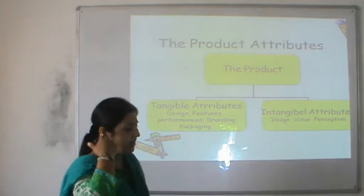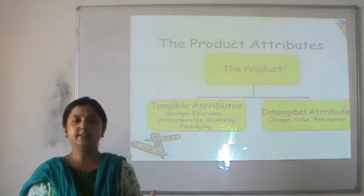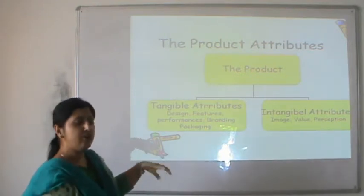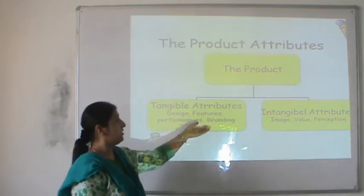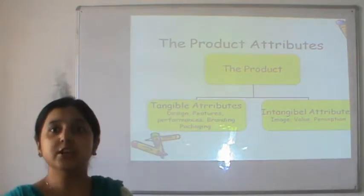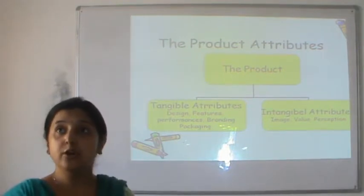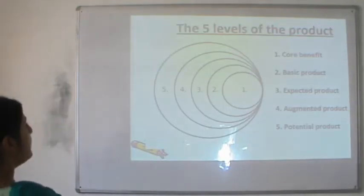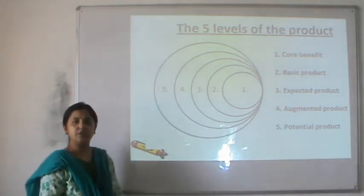The product is made up of two types of attributes. Certain attributes can be seen, touched, felt, and kept for the long term — these are the tangible aspects, such as the design, look, packaging, or name of the product. There are other aspects which the consumer can only experience — the image the product provides, the value perceived, and perception levels. This figure helps us understand that there are different types of consumers: some looking for basic features, while others want the product to be the best in its category.